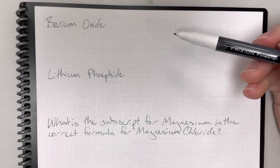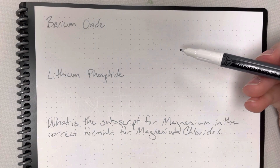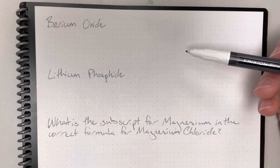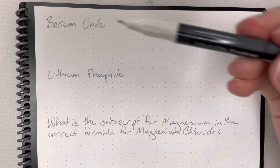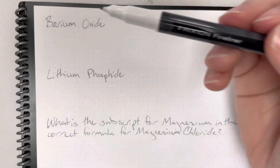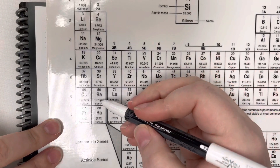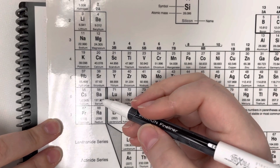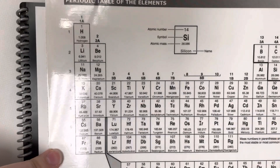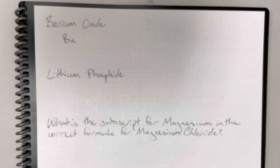When naming or going from the name to the formula for barium oxide, the first thing I need to do is figure out what the symbol is for barium. I will reference the periodic table. When I find barium, I see that barium's symbol is Ba and it is in column 2.